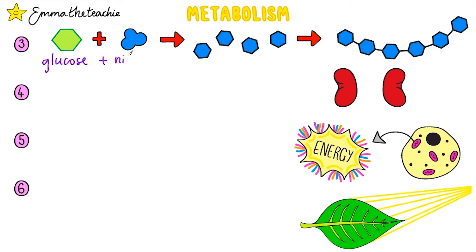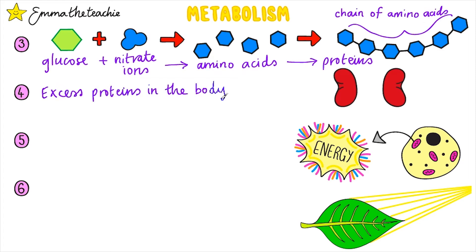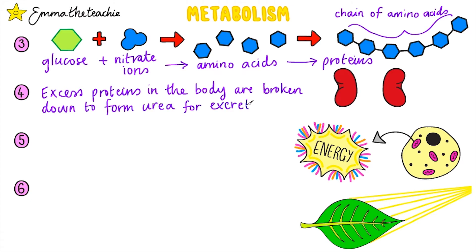Glucose and nitrate ions are used to form amino acids, which are then used to synthesize proteins — proteins are just chains of amino acids. Excess proteins in the body are broken down to form urea for excretion. This is processed in the kidneys and leaves the body as urine.